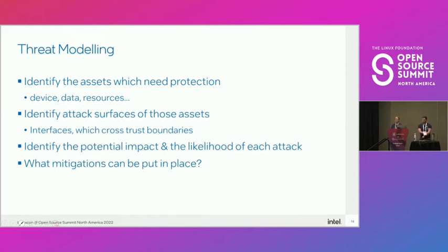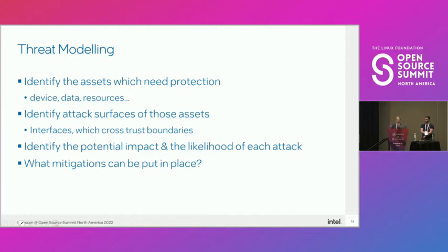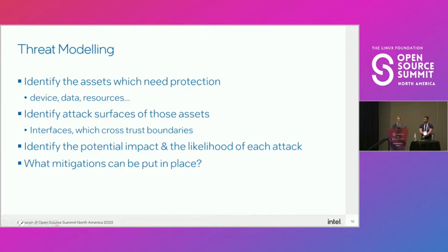On threat modeling: we look at what assets need protection — the device itself, the DMA memory used, the firmware within the device. We go through each asset in a spreadsheet and ask what's the attack surface for each, is it possible to access them, and where are trust boundaries crossed — is it on the data path, from SysFS, or somewhere an untrusted process has access? For each we assess the potential impact if attacked and how likely it is, then determine what mitigations to put in place. This informed how we validate and what we changed.